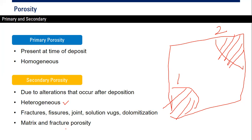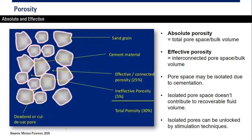We can also distinguish between absolute and effective porosity. Starting from the left picture: at the surface of each rock grain is cement material, and between grains we have void space — the pores. If the pores are connected, we call it effective or connected porosity, meaning fluid can pass through them.